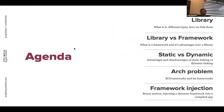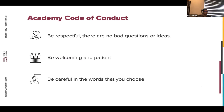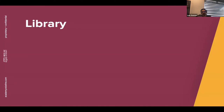So the agenda for today: first we will start with libraries — I will tell you what a library is, the different types that exist, and how we link them. Then we'll see the differences between libraries and frameworks, what a framework is and its advantages. Then we'll review static versus dynamic linking, the advantages and disadvantages of each. Then we'll see the architecture problem where I'll talk about XCFrameworks and fat frameworks. And finally, a bonus section where I'll be injecting a dynamic framework at runtime in an app. Some ground rules: please be respectful, there are no bad questions or ideas, be welcoming and patient, and be careful with the words we choose.